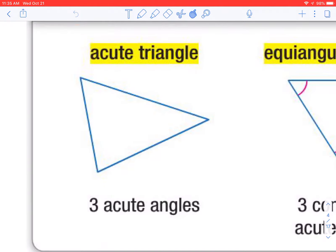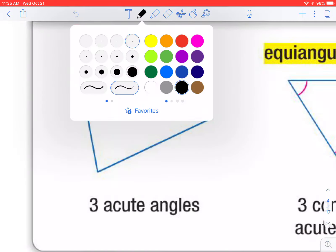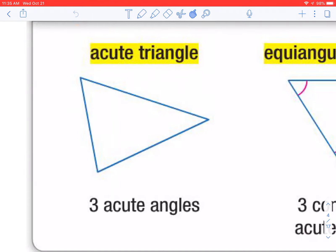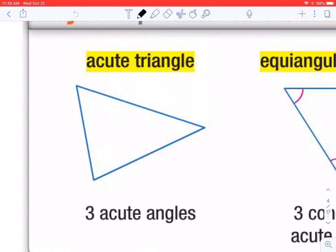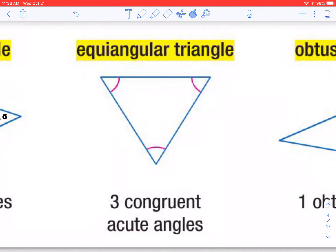We're going to start out with classifying a triangle by the angles. Our first one would be an acute triangle. That means every angle, for example, 50, 60, and 70 degrees, those three would all make a triangle. And it would be called an acute triangle. Next one is called equiangular, meaning all the angles are equal. In an equiangular triangle, the angles are always 60 degrees. Three congruent acute angles.